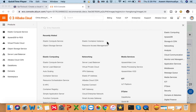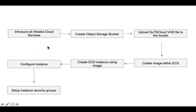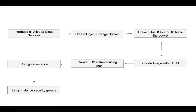Before we go ahead, let me show you what steps we are going to cover in today's tutorial. We are going to cover seven steps: first, I'll introduce all the Alibaba cloud services; then create an object storage bucket; upload the QTS cloud VHD file to the bucket; create an image within ECS; create the ECS instance using this image; do the instance configuration; and finally set up the security groups.